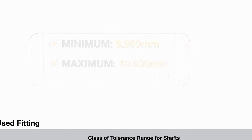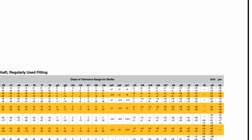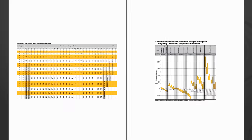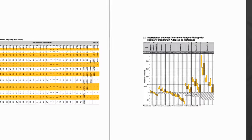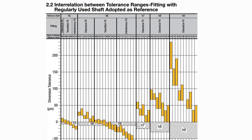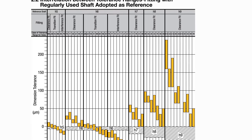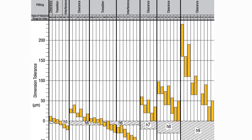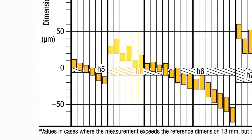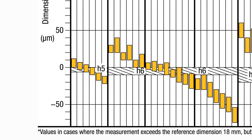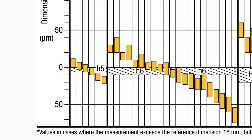Misumi offers a useful table to help you choose the appropriate tolerance combination in your application. If we would like this 10H6 shaft to exhibit a clearance fit, we can see each tolerance class that would satisfy this condition.